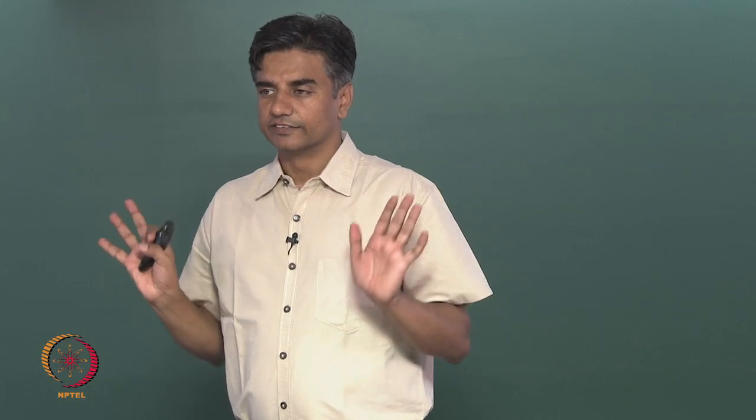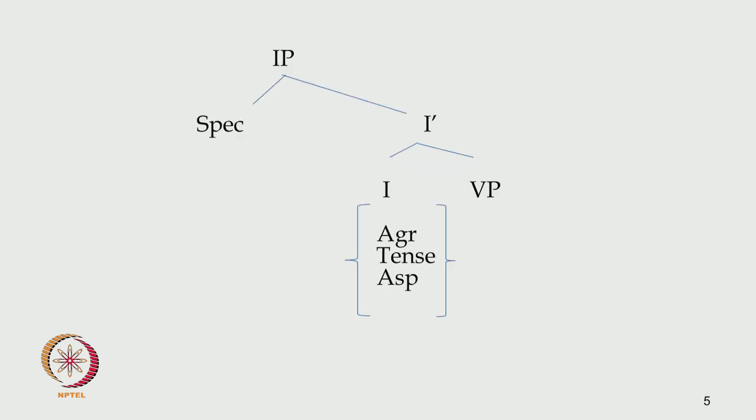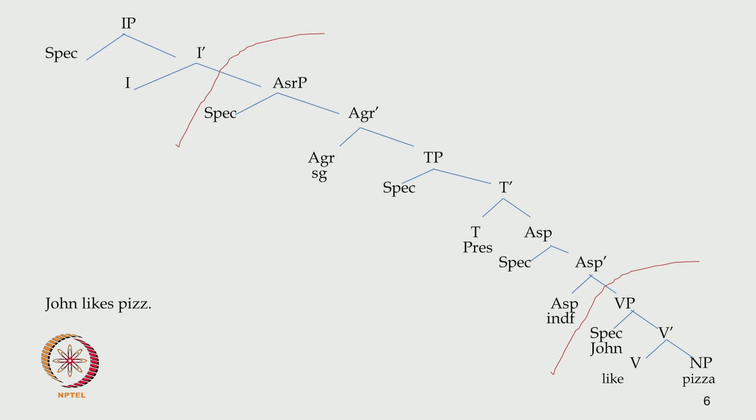This is how a sentence looks like in a normal situation. There doesn't seem to be a compelling reason for us to allow agreement, tense and aspect under one bundle. So the split was allowed in this particular way, where IP was not allowed — we got rid of IP. There appears to be two categorical layers of functional layer and lexical layer. This is how a sentence looks like in a canonical order, whether we look at IP or AGRP.